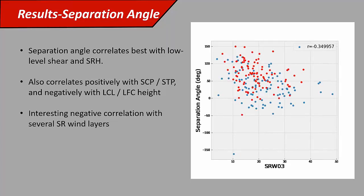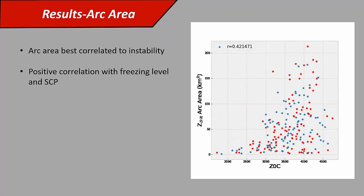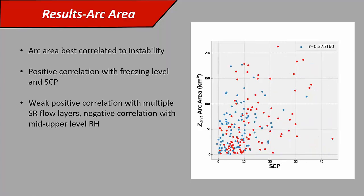There was also an interesting negative correlation with several storm-relative flow layers. Storm-relative wind in the lowest three kilometers, you tended to have smaller separation angles with stronger storm-relative wind, which I found to be interesting. Final parameter, arc area, is best correlated with instability, had a positive correlation with freezing level and SCP. Generally speaking, if you have a low freezing level, you're going to have a smaller arc. It also had a weak positive correlation with some storm-relative flow layers, and you tended to have larger arcs in drier mid- to upper-level environments.